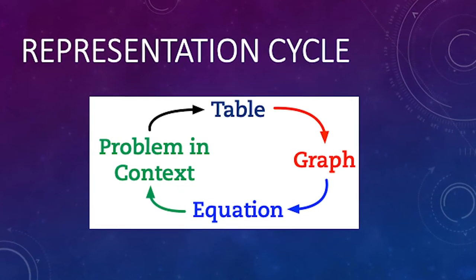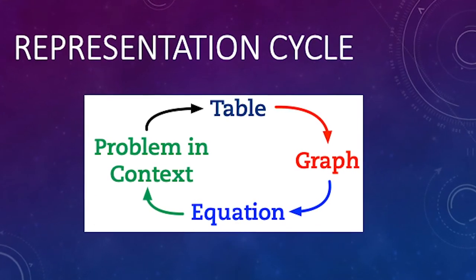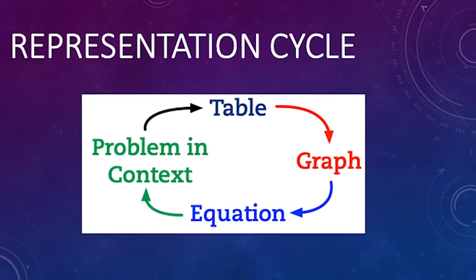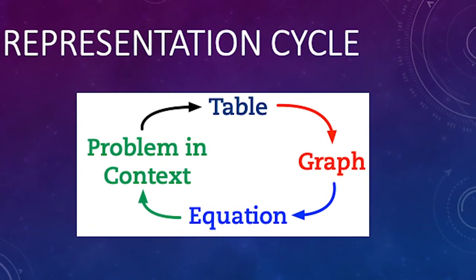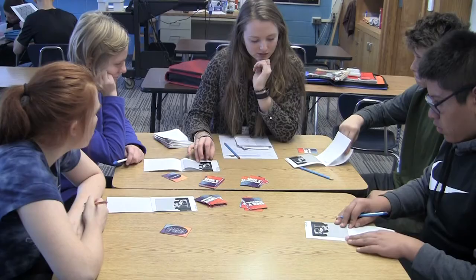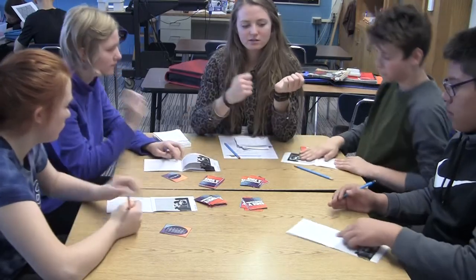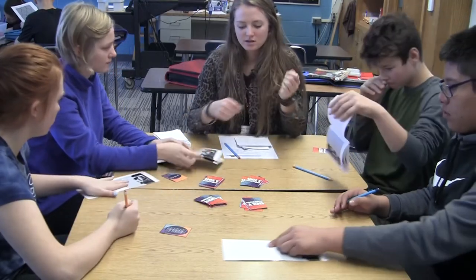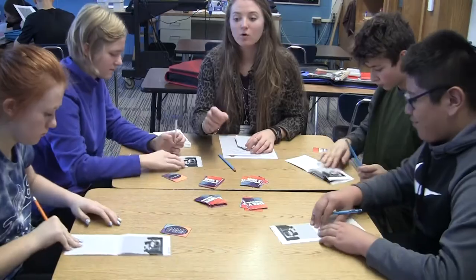The order of the representation cycle is table, then graph, then equation, then problem in context, and back to table. After drawing the representation, flip to the next blank page and pass the recording booklet to the left.